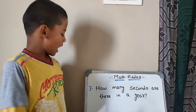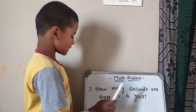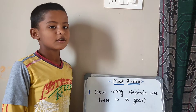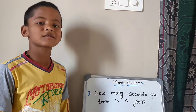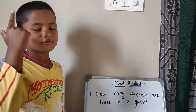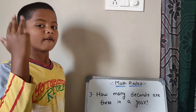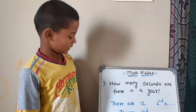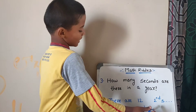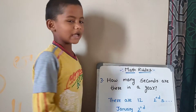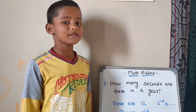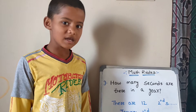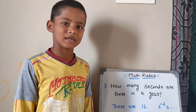Video number 3. How many seconds are there in a year? Your time starts now. Answer is 12 seconds — that is, January 2nd, February 2nd, March 2nd, up to December 2nd.